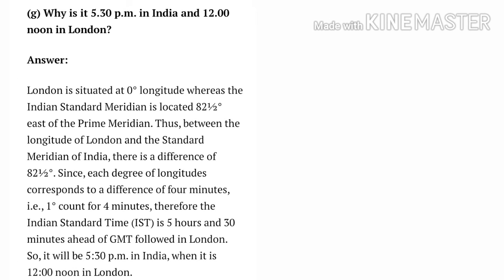Question number G: Why is it 5:30 PM in India and 12:00 noon in London? Answer: London is situated at zero degrees longitude whereas the Indian Standard Meridian is located 82 and a half degrees east of the Prime Meridian. Thus, between the longitude of London and the Standard Meridian of India, there is a difference of 82 and a half degrees. Since each degree of longitude corresponds to a difference of four minutes, therefore the Indian Standard Time is five hours and 30 minutes ahead of GMT followed in London.